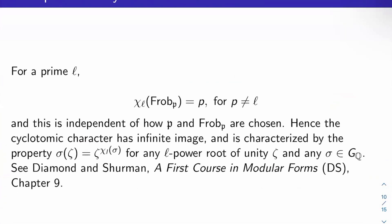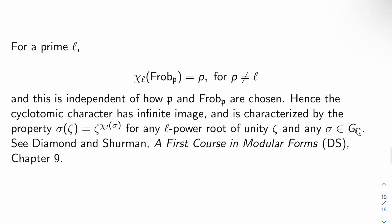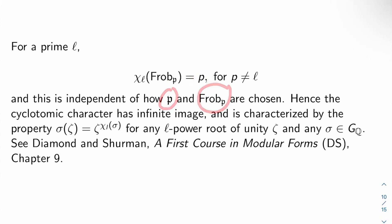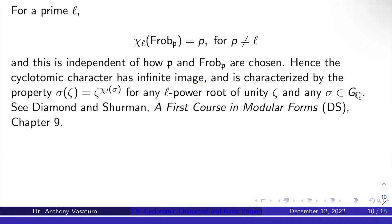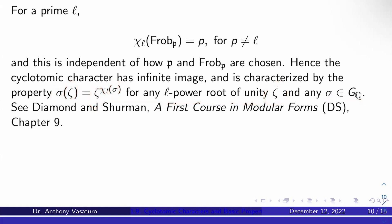As an example, let's go back to the cyclotomic character. Fix a prime P and give me a prime L. Look at the L-adic cyclotomic character chi_L evaluated at Frob_𝔭, where 𝔭 is a prime lying over P. It turns out you get P when P ≠ L. This is independent of how both 𝔭 and Frob_𝔭 are chosen. From this, you can see that the L-adic cyclotomic character has infinite image, and is characterized by: sigma(zeta) = zeta^{chi_L(sigma)} for any L-power root of unity zeta and any sigma in G_Q.